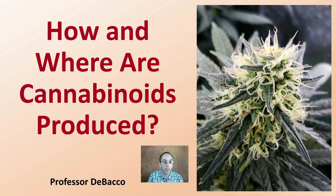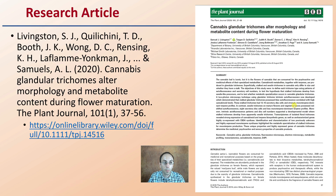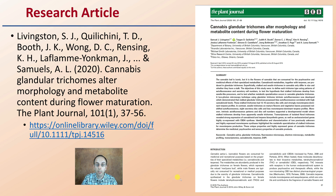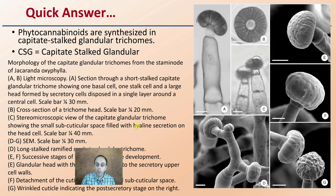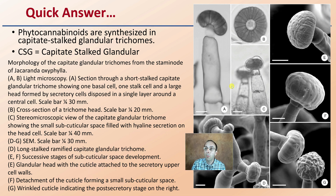Let's get into the detail on how and where cannabinoids are produced in cannabis plants. Here's a great research article you're welcome to look at — the images will be provided from here to give you that extra level of detail. When we're looking at where these cannabinoids are produced, phytocannabinoids are synthesized in the capitate stalked glandular trichomes, referred to as CSGs. That's the quick answer, and those are the structures that they look like.